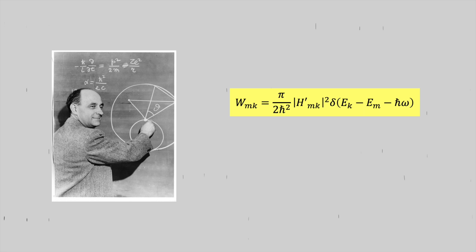It has a couple of properties, and the most important part here is that W is proportional to the square of the perturbation matrix element H. And this is super important. H is a Hermitian operator, which means that the absolute value of HKM and HMK is the same.